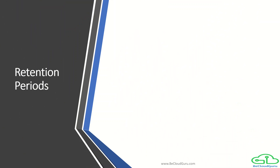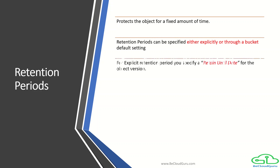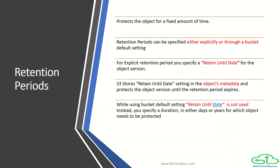Now let's look at retention periods. A retention period protects your object for a fixed amount of time. You can explicitly specify retention periods or apply them through bucket default settings. If you set an explicit retention period, you specify a 'Retain Until Date' for the object version, which is stored in S3 as the object's metadata. When using bucket default settings, instead of a date you specify a duration — one month, two months, three days, one year — for which the object needs to be protected.